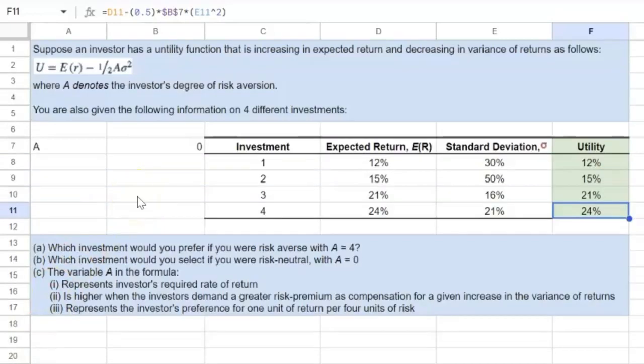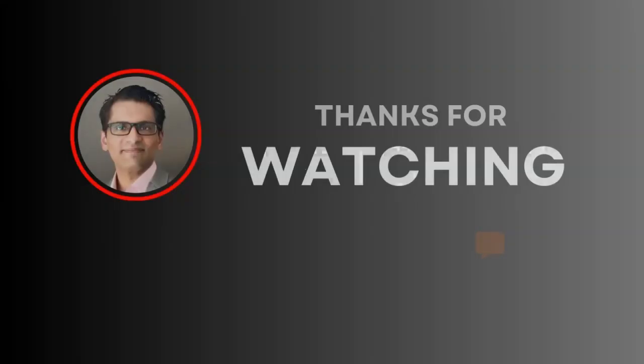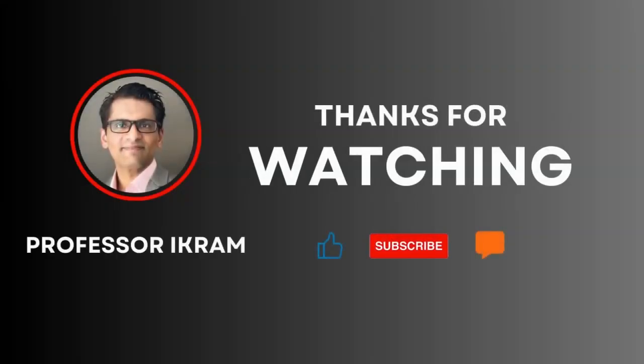So there you go. A very simple problem in Excel that shows you how an investor's degree of risk aversion combined with expected return and variance influences their utility and hence their investment choice. If you found this video useful, click the like button and subscribe to the channel and feel free to ask any questions using the comment section. Happy learning.